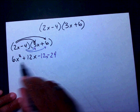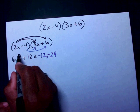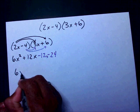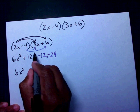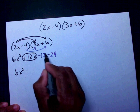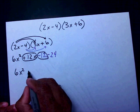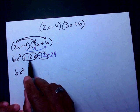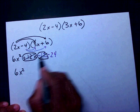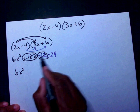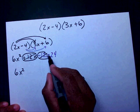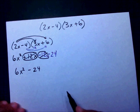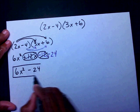Now I'm going to combine my like terms. I only have one x squared, so I bring it down to 6x squared. I have 12x and negative 12x, which is zero — they cancel each other out. So the solution is 6x squared minus 24.